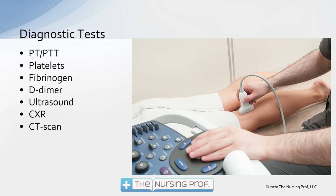Diagnostically, we can look at PT-PTT, which gives us an indication about the patient's clotting factors. Ultrasound is performed — often focusing on the area behind the knee, which frequently harbors clots due to the bend in circulation. We can look at platelets, fibrinogen, or the D-dimer test. D-dimer elevates whenever there are clots in the body, but an elevated D-dimer does not tell you the patient has a PE or DVT specifically — it just indicates clotting is occurring somewhere. However, a positive D-dimer along with other risk factors is a strong indication of a possible pulmonary embolus.